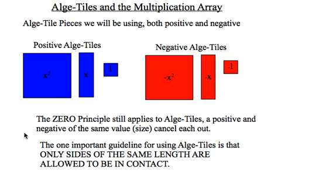The zero principle applies, so a pair of x squared and negative x squared would cancel each other off for zero. And lastly, the most important rule we need to remember is that algae tiles can only contact each other along the same side length.